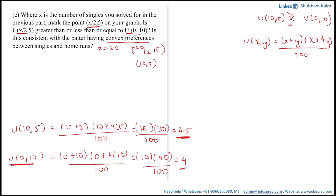Clearly 4.5 is more than 4, which means the utility at 10 comma 5 is greater than the utility at 0 comma 10. So the answer here is: greater than — the utility at consumption bundle 10 comma 5 is greater than the utility at consumption bundle 0 comma 10.